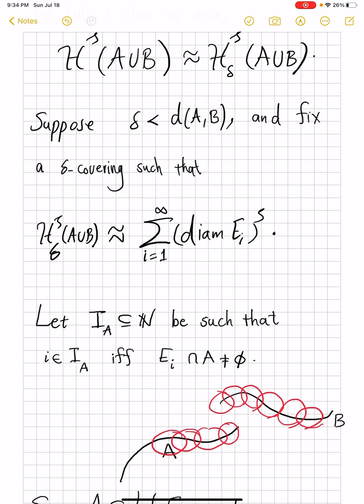Now, because each set E_i has diameter less than δ, if E_i picks a point from A, it cannot pick a point from B, because that would force the distance of A and B to go less than δ, but δ is less than the distance A and B by assumption. Therefore, every set E_i you pick either helps cover B or helps cover A.